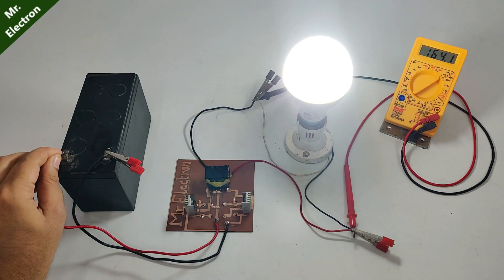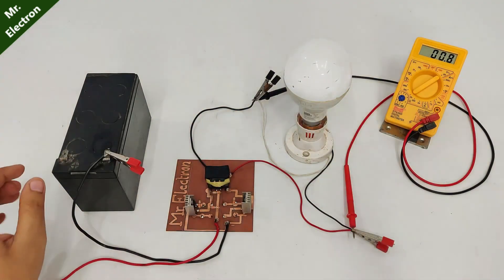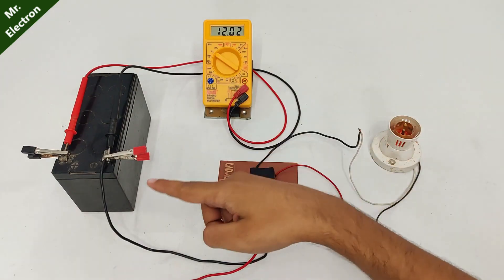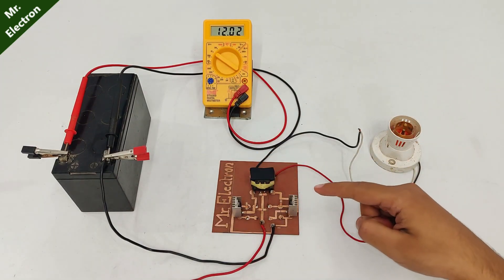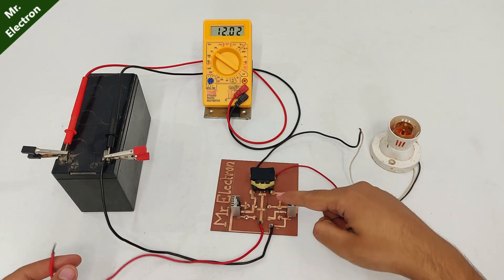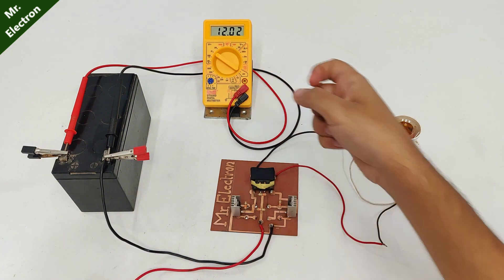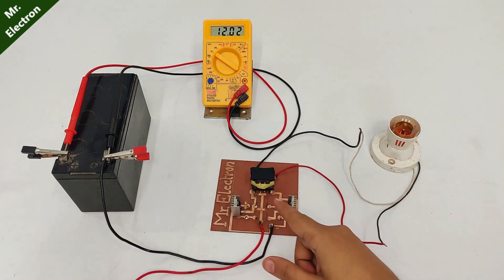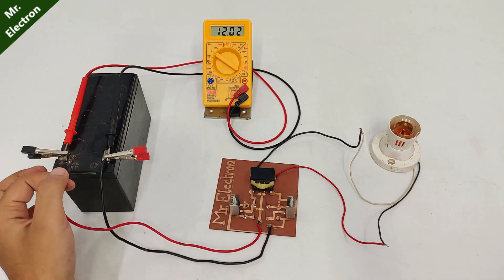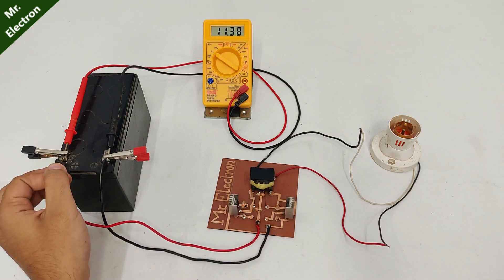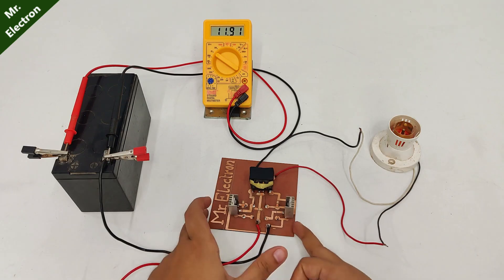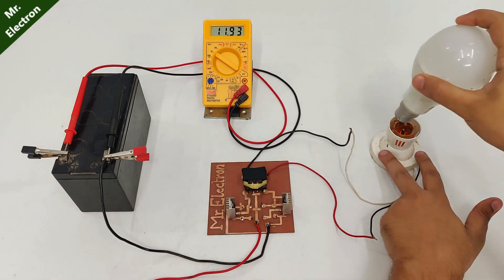Here I'm showing you three scenarios. The first one is when no load is connected, you see this wire is not connected, so the battery voltage is 12 volts. Now there is no bulb connected over here so the inverter is not loaded. Let's see the drop - it is 11.24 volts at no load.